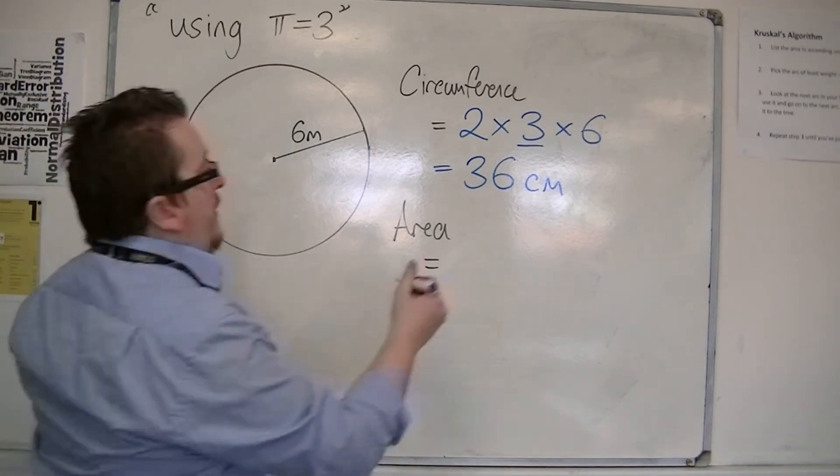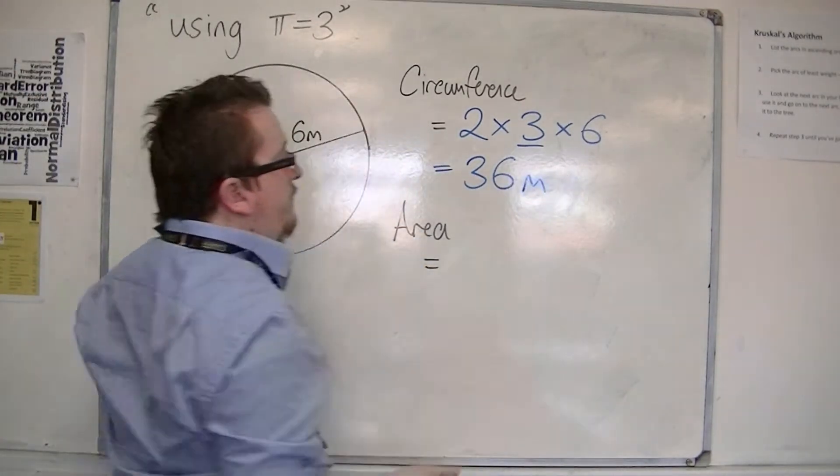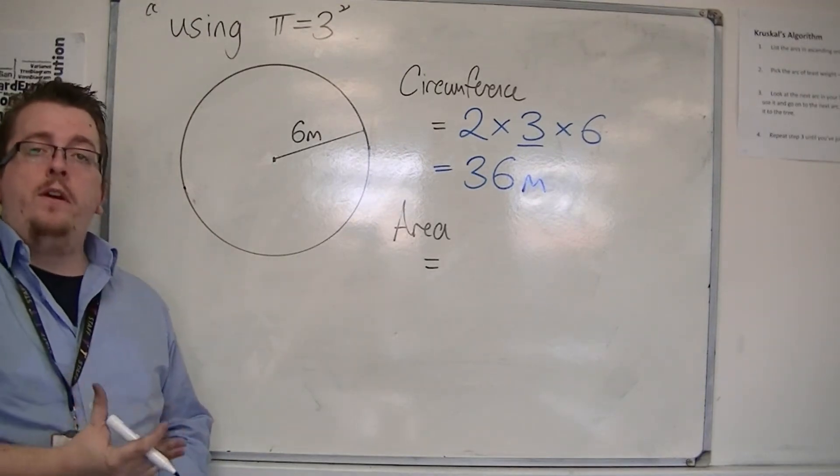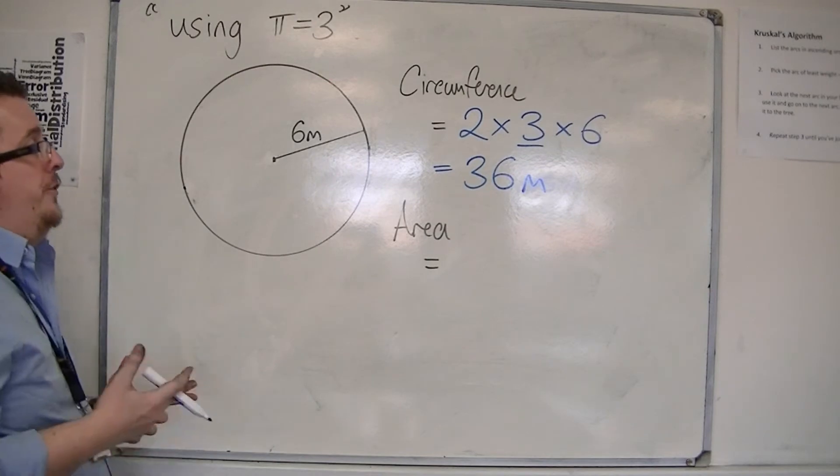Sorry, it's not in centimeters, it's in meters. Get it right? So 36 meters. And that is my approximation for the circumference of the circle.